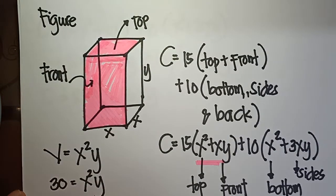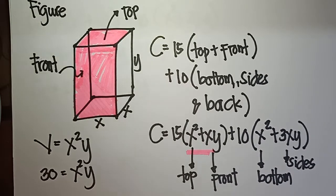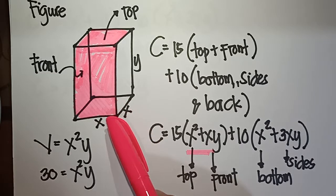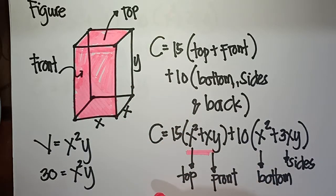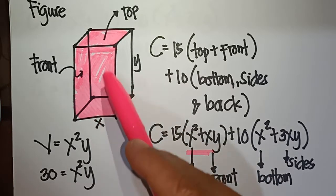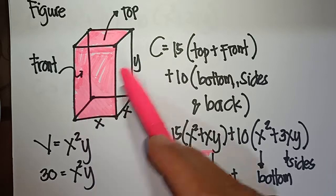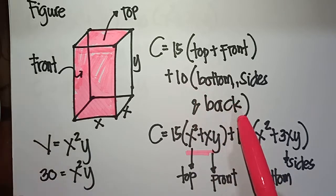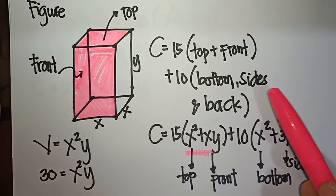So we have here the figure — a rectangular box with a square base and top portion. The top and the front cost 15 per square meter, while the remaining three sides and the bottom part cost 10 per square meter.